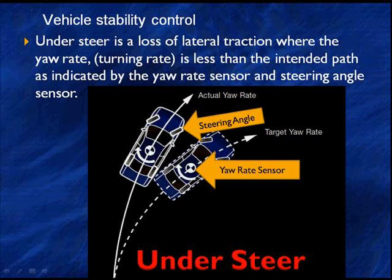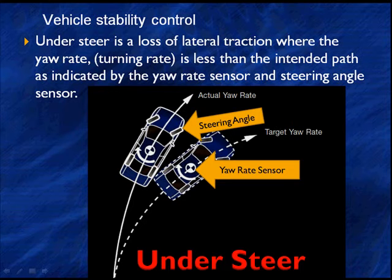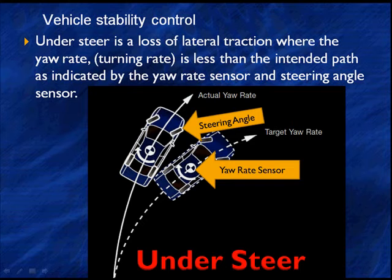Understeer is a loss of lateral traction where the yaw rate — which could be described as the turning rate — is less than the intended path, as indicated by the yaw rate sensor and the steering angle sensor. The yaw rate sensor is located in the center of the vehicle and actually calculates the true turning rate of the vehicle. The steering angle gives us which direction the driver wants to turn. If it's indicating a steeper turn than the yaw rate is indicating, we have an understeer situation.